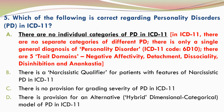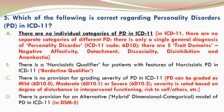There are five trait domains: negative affectivity, detachment, dissociality, disinhibition and anankastia. The assessment of these five trait domains will help make a diagnosis of personality disorder. B is incorrect because there is only a borderline qualifier for patients with features of borderline personality disorder. This is only a qualifier and does not have a separate diagnostic code.